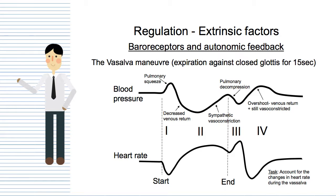Then we see an increase in blood pressure. Obviously, if your blood pressure is decreasing dramatically, your sympathetic nervous system is going to act on the blood vessels and cause vasoconstriction. Vasoconstriction increases blood pressure because you're trying to get the blood pressure back to normal. So you see a strong sympathetic vasoconstriction to restore blood pressure.